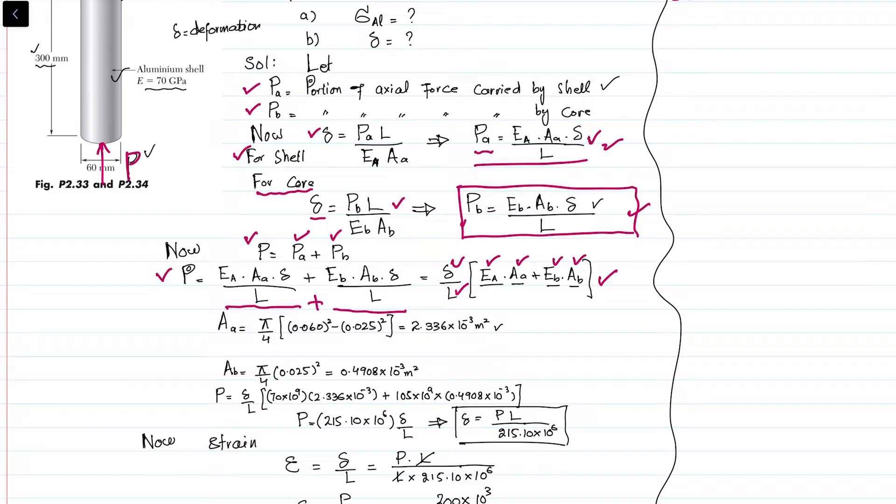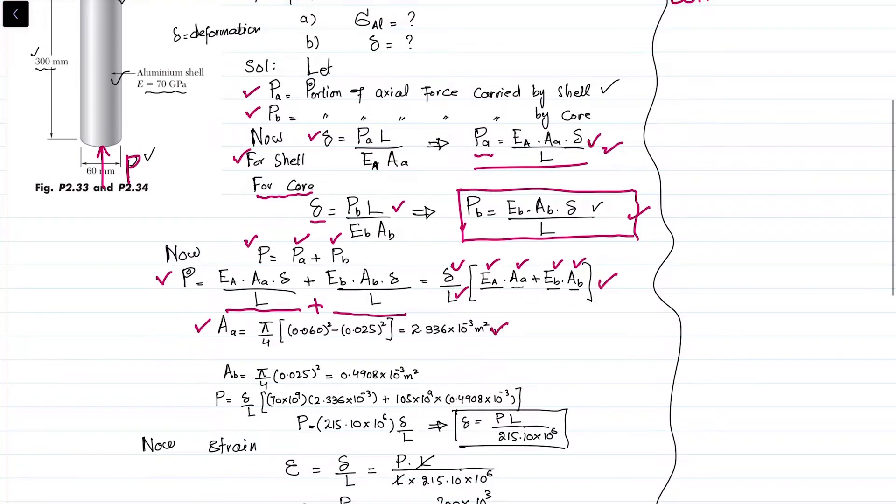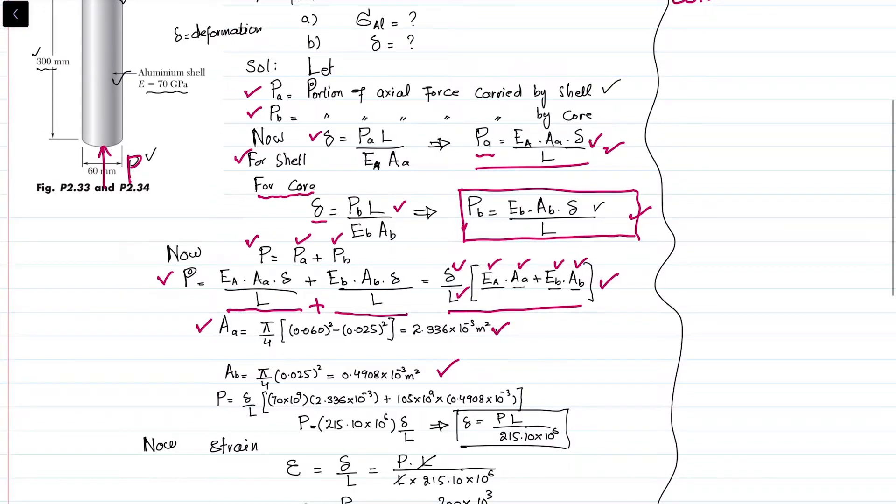First, find Aa - the area of aluminum shell equals pi by 4 times the outer diameter squared. I explained this in problem 2.33. Area of brass core is calculated similarly. When you put these in the formula, you get the result.